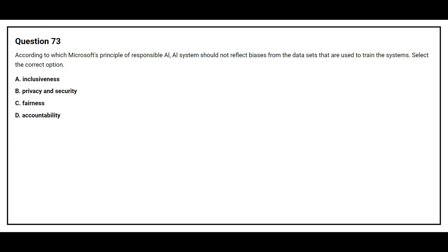Question number 73. According to which Microsoft principle of responsible AI should an AI system not reflect biases from the dataset used to train the system? Option A: Inclusiveness. Option B: Privacy and Security. Option C: Fairness. Option D: Accountability. The correct answer is Option C, Fairness.